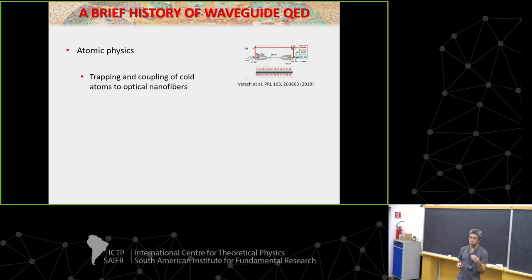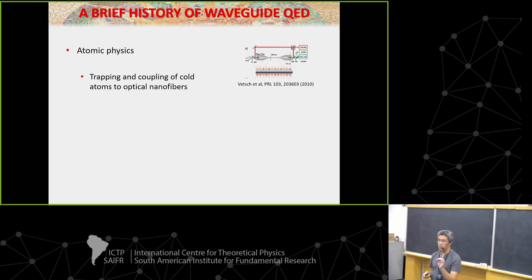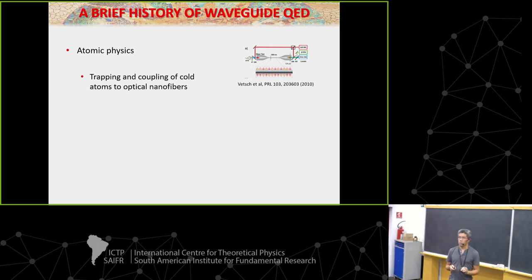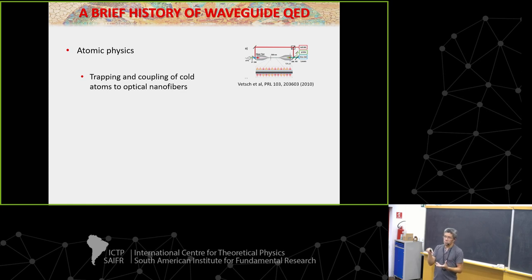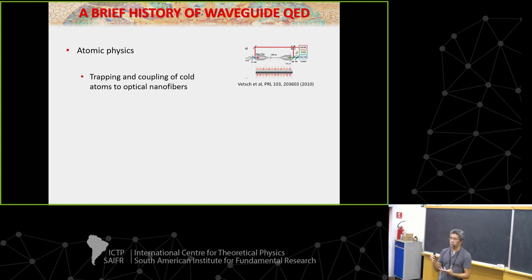It turns out that no matter how thin the fiber is, there's no cutoff, so in principle light can still be guided through the fiber. But the diffraction limit still holds, so you can't confine light arbitrarily tightly. What happens when you pull the fiber very thin is that even though the core region is very thin, to obey the diffraction limit, a lot of the light — even though it's guided — starts to live outside the fiber core and in the vacuum region.